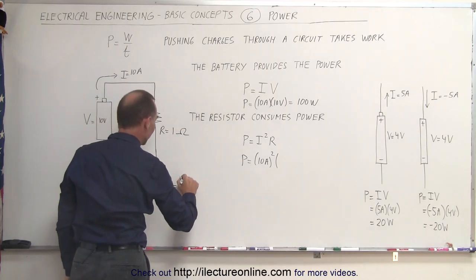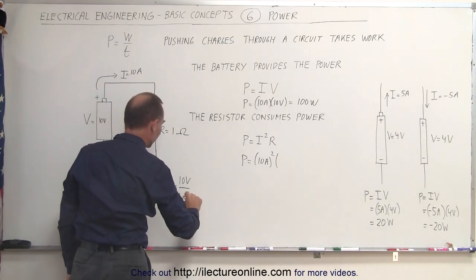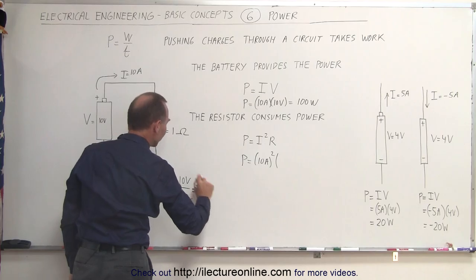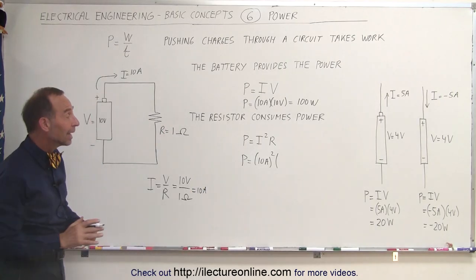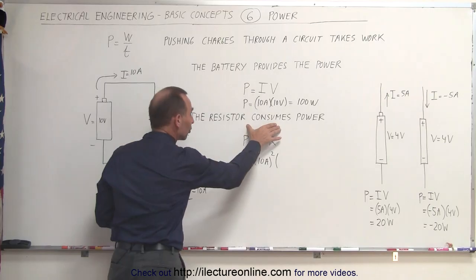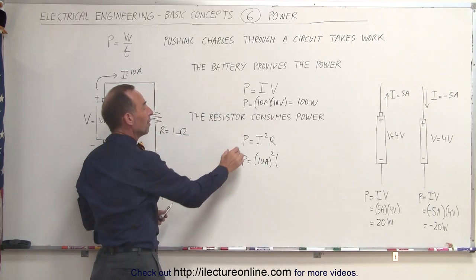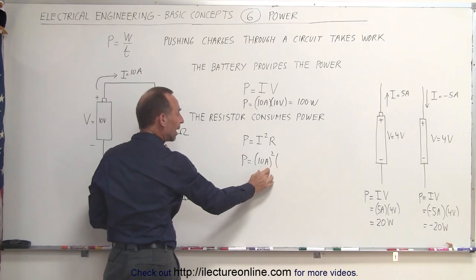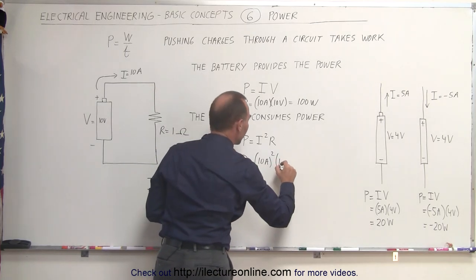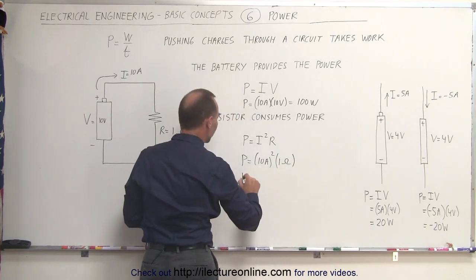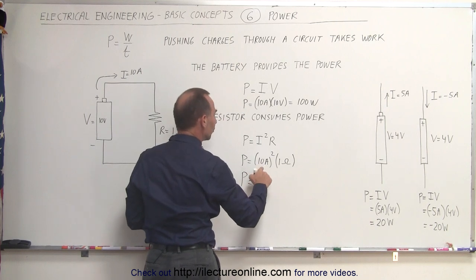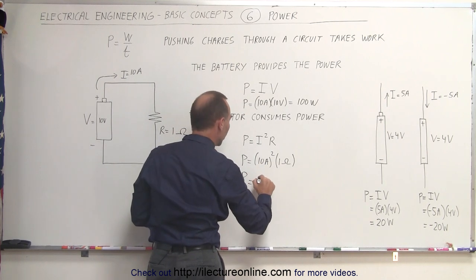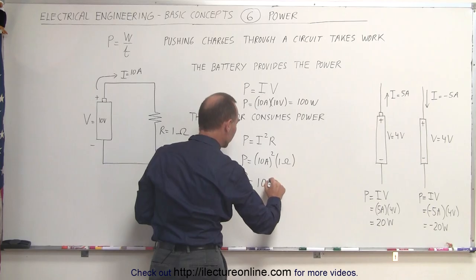In this case, I is V, 10 volts, divided by R, which is 1 ohm, which is 10 amps. Everything works better now. Again, going back to the power consumption equation for the resistor, power equals current squared times the resistance. The current was 10 amps. We square that. The resistance is 1 ohm. You can see here that power is equal to 10 squared, that's 100 times 1, or that would be 100 watts.